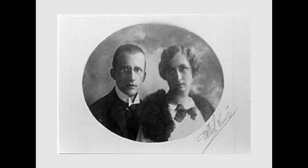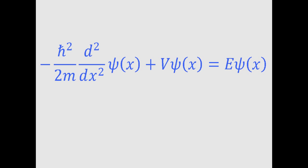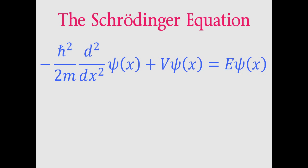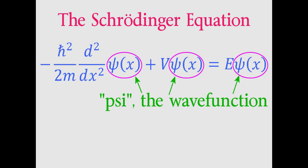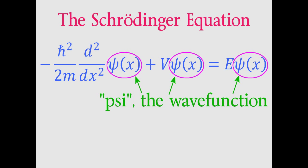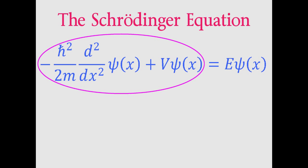Schrödinger realized that the energy anything has is related to its wave function. Here's the equation he came up with that connects the wave function to the energy. This is probably the single most important equation in quantum mechanics, and it's known as the Schrödinger equation. To really understand it, we'd have to use calculus, but I'll give you the general idea right now. This symbol is the Greek letter psi, and it represents the wave function. So psi is the equation of the wave that we're looking at, and E is the energy. So all of this stuff on the left is equal to E times the equation of the wave function. So what is all this stuff on the left? Well, this side of the equation has two parts.